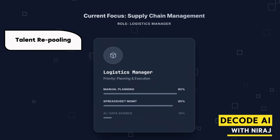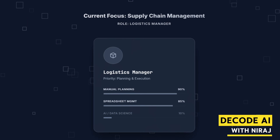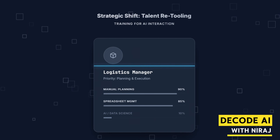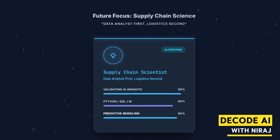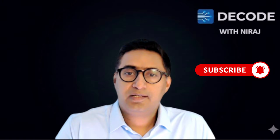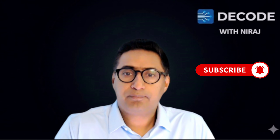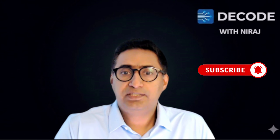Strategic Action Three: Talent Repooling. We must shift our talent focus from supply chain management to supply chain science. Your team needs to be trained not just in planning and logistics, but in interacting with and validating AI-generated insights. The future supply chain leader is a data analyst first and a logistics manager second.